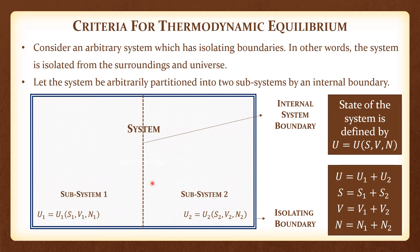Since U, S, V, and N — internal energy, entropy, volume, and number of moles — are all extensive properties, adding the contributions from each subsystem gives the total. So U₁ + U₂ equals total internal energy, S₁ + S₂ equals total entropy, V₁ + V₂ equals total volume, and N₁ + N₂ equals total number of moles or molecules in the system.